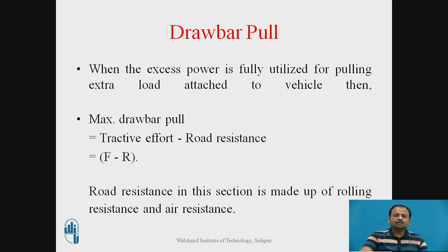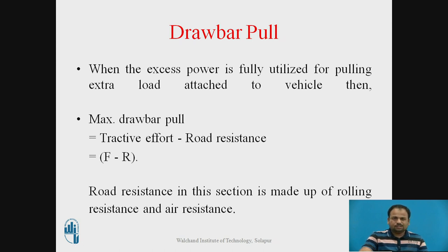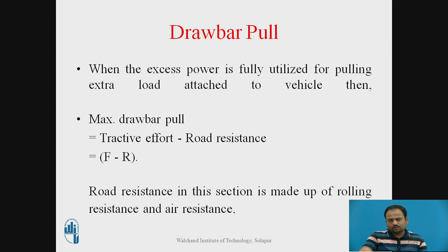When the excess power is fully utilized for pulling extra load attached to the vehicle, then maximum drawbar pull equals tractive effort minus road resistance — that is F minus R. This F minus R represents the surplus power available when the vehicle is not at full throttle condition. That surplus power is the drawbar pull, which we utilize for climbing a grade, for accelerating the vehicle, and for carrying extra load. These are the three advantages from which we can say performance can vary with the help of drawbar pull.